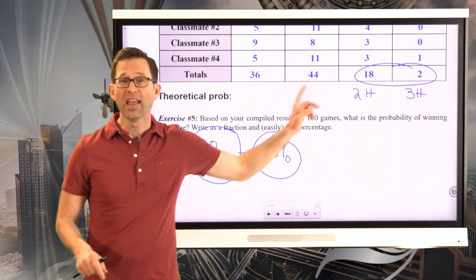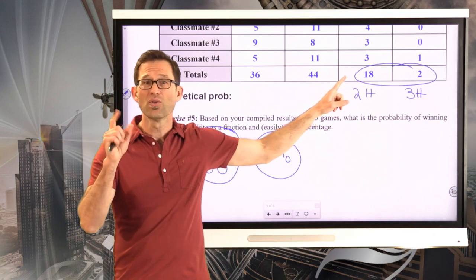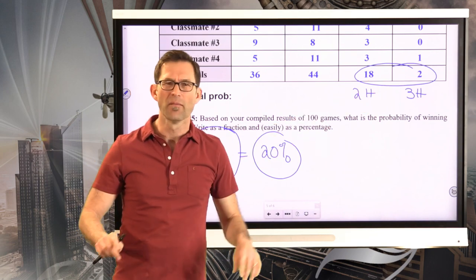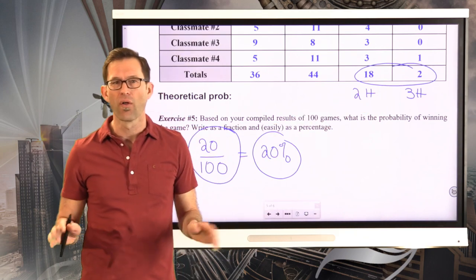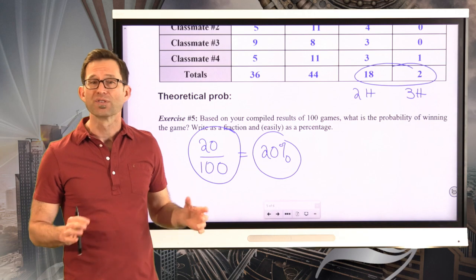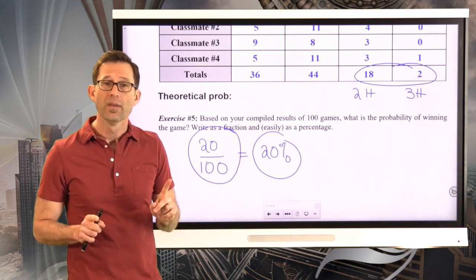So we find roughly 20% of the time, we're going to win this game. We're going to either get - in 18% of the time, I'm going to get in two darts. 2% of the time, very small, I'm going to get in all three darts, for some total of 20%.